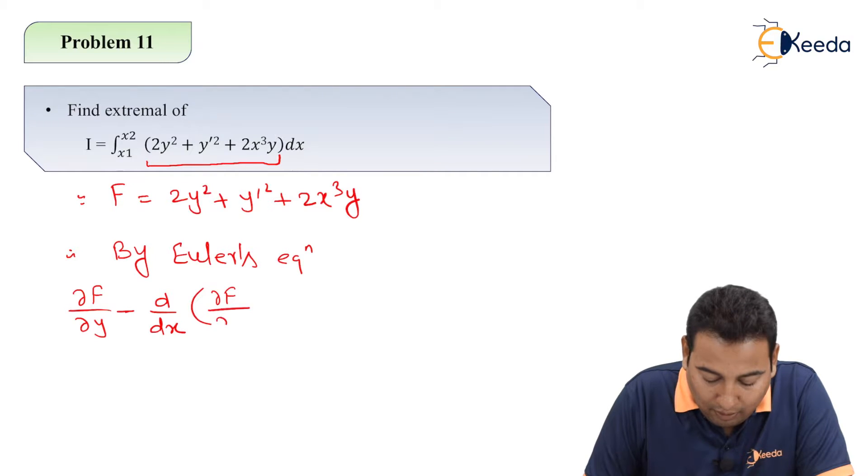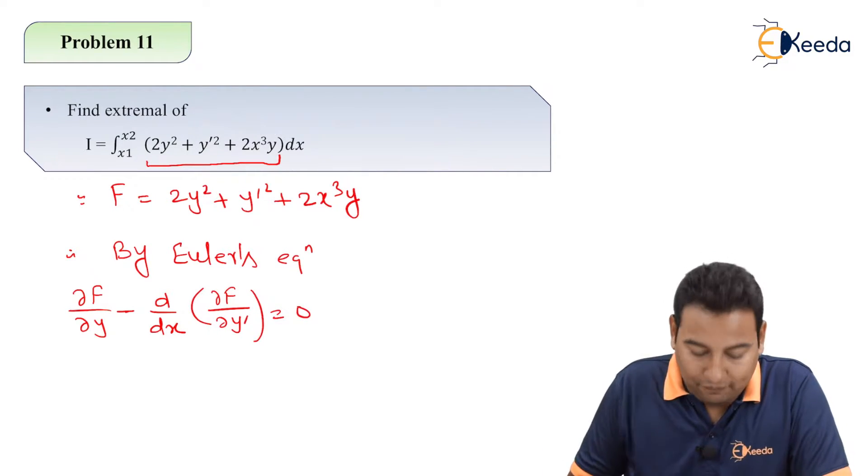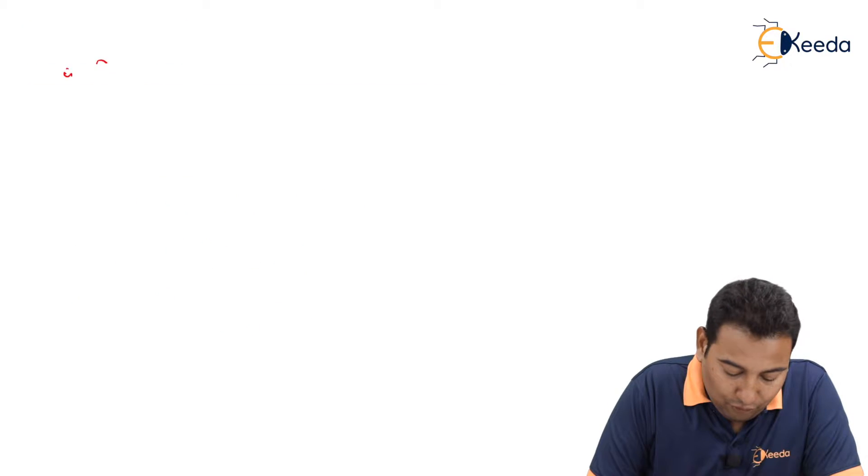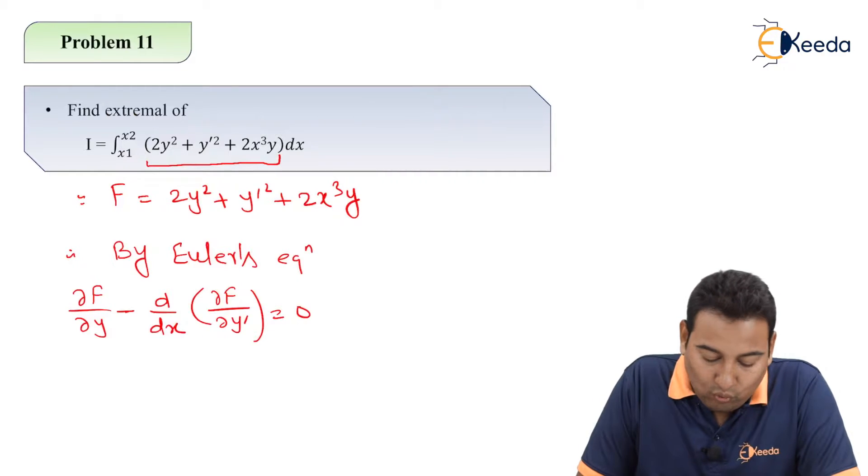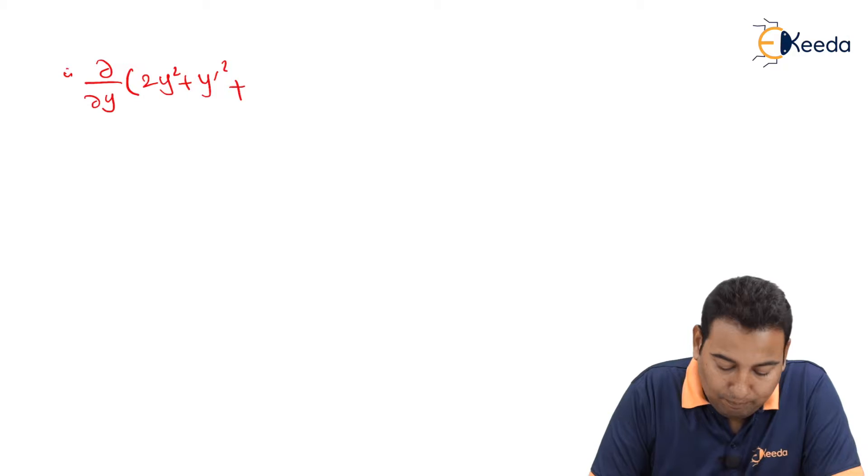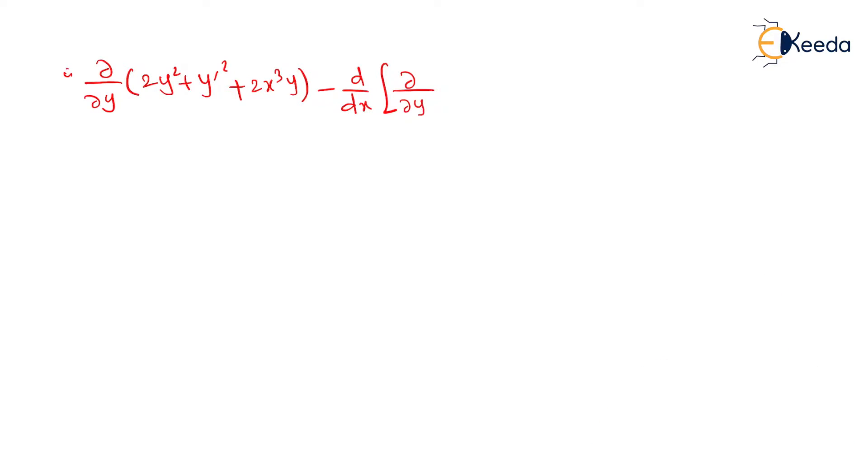Let's substitute f. Therefore ∂/∂y of f, where f is 2y square plus y dash square plus 2x cube y, minus d/dx of ∂/∂y' f equal to 0.